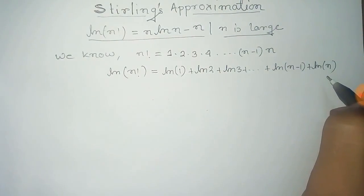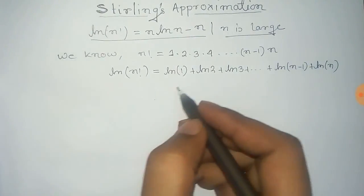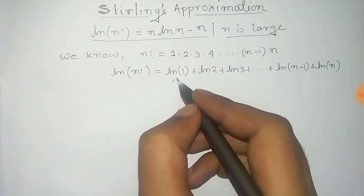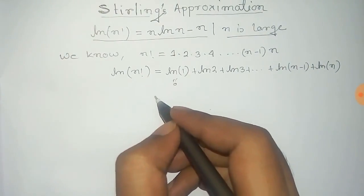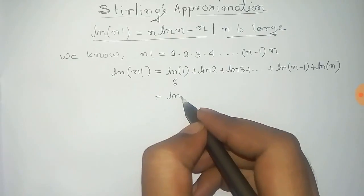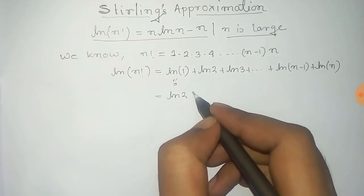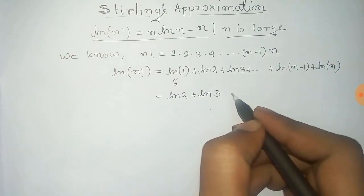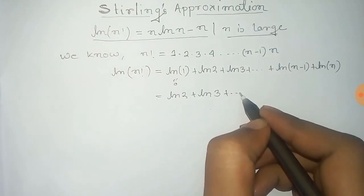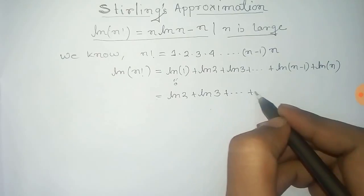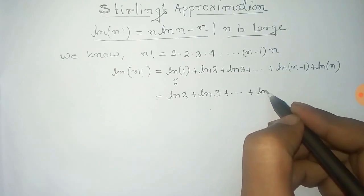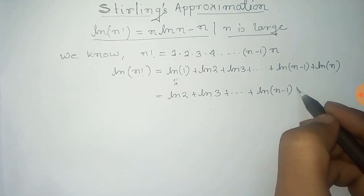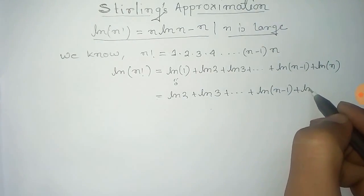Now we know that the value of log 1 is 0, so that term is 0. So this series becomes log 2 plus log 3 plus log 4, plus so on, until log(n minus 1) plus log n.